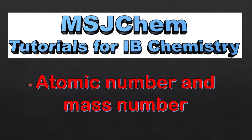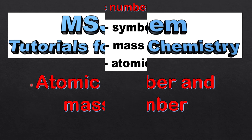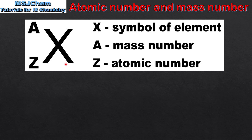This is MSJChem. In this video I'll be looking at the atomic number and mass number. We'll start by looking at the nuclear symbol notation. In the nuclear symbol notation, X is the symbol of the element, Z is the atomic number, and A is the mass number.